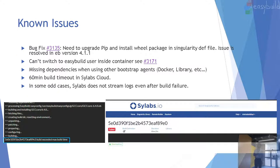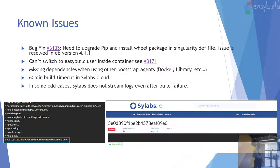The first thing I want to point out are some issues, because if you go ahead and try to actually do this, you're going to run into problems. The first one is issue 3135, which was to upgrade pip and install the wheels package in the Singularity recipe file. This issue has been resolved in version 4.1.1, which is the latest version, so just upgrade EasyBuild and that should fix it.